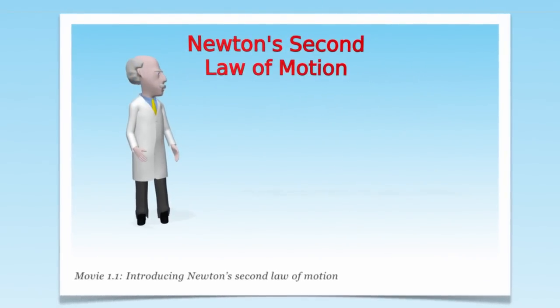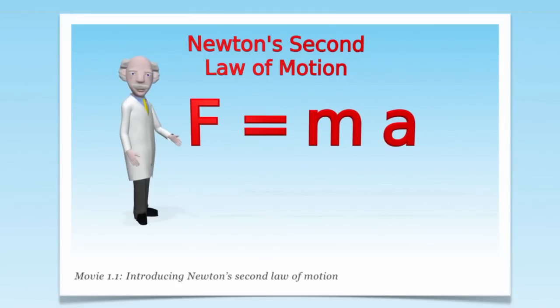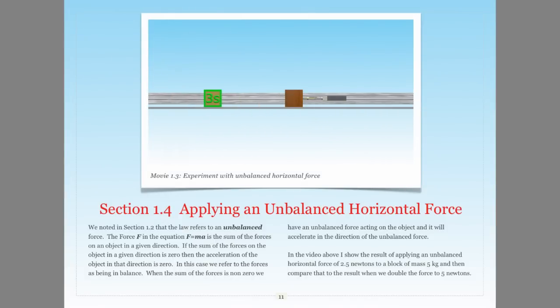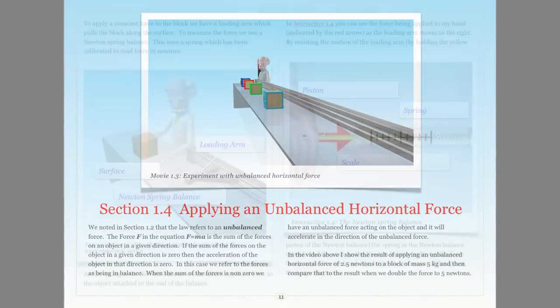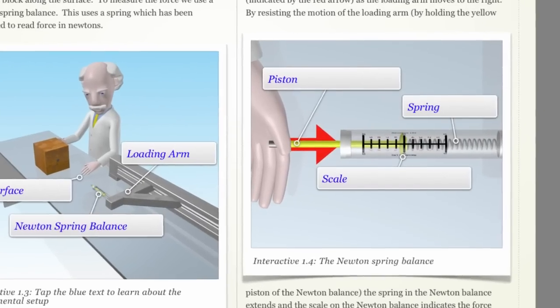In the animations, I explain the equation F equals MA and then conduct a series of experiments to show the law in action. You will see in detail the experimental equipment I use, including a Newton spring balance.